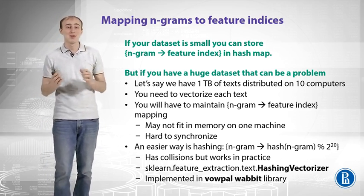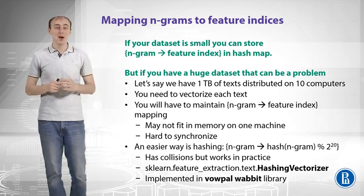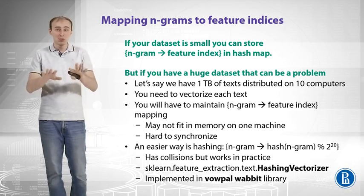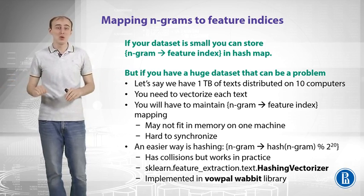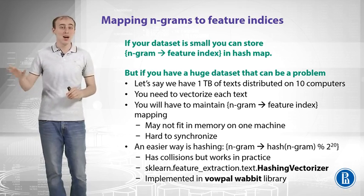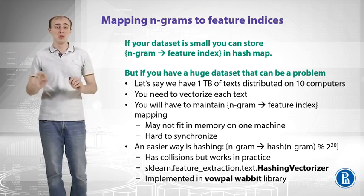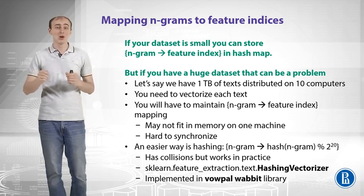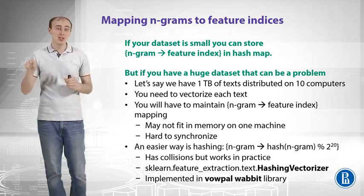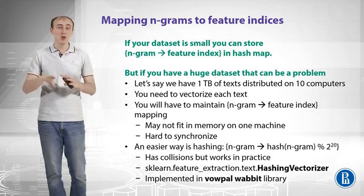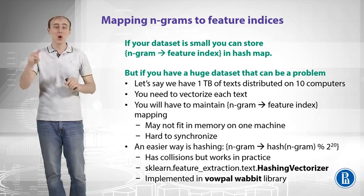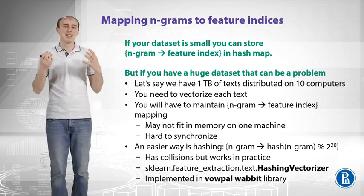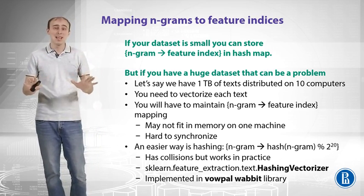Another problem is that it is difficult to synchronize that hash map, because when a new n-gram appears you have to introduce a new index for it, and 10 machines are doing that in parallel, which means they need to synchronize somehow. Machine number one finds a new n-gram and takes the next free index in the shared hash map. But that n-gram should be converted to that feature index on all other machines as well, so all other machines must know that the first machine introduced a new feature index.